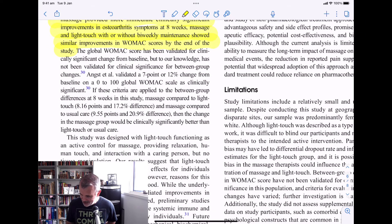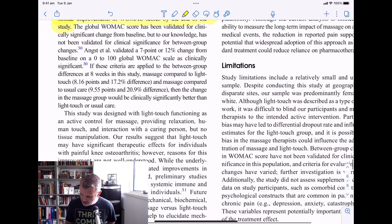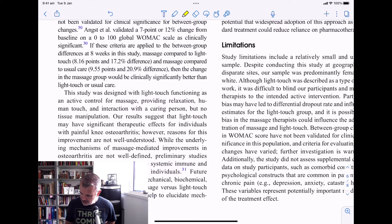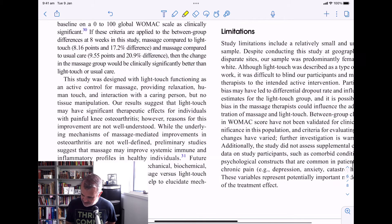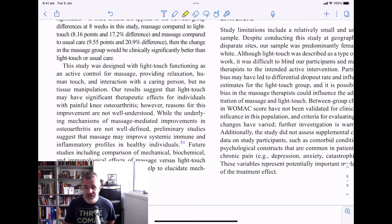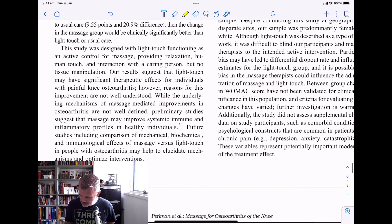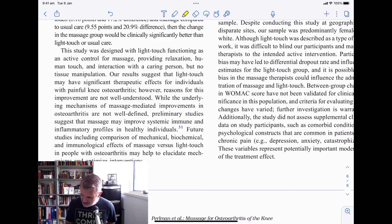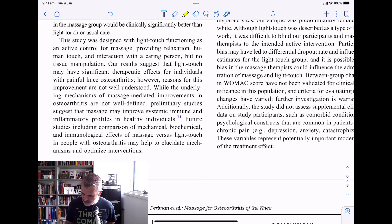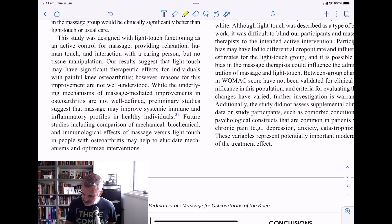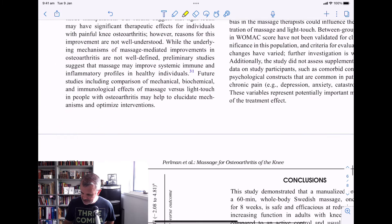This study was designed with light touch functioning as an active control for massage, providing relaxation, human touch, and interaction with a caring person, but no tissue manipulation. Research suggests that light touch may have significant therapeutic effects for individuals with painful knee osteoarthritis. However, reasons for this improvement are not well understood. So sensory information, touch, talking, can actually improve your knee osteoarthritis, not just massage alone. While the underlying mechanisms of massage mediating improvements in osteoarthritis are not well defined, preliminary studies suggest that massage may improve systematic immune and inflammatory profiles in healthy individuals. Future studies, including comparison of mechanical, biomechanical, and immunological effects of massage versus light touch in people with osteoarthritis might help elucidate mechanisms and optimize interventions.